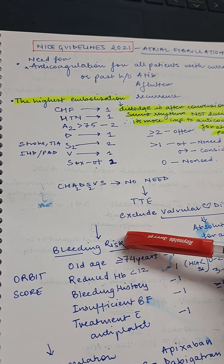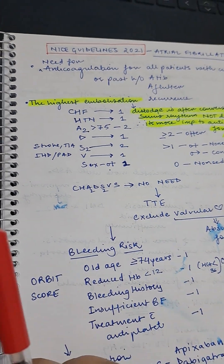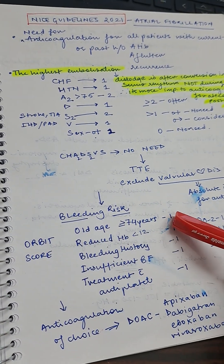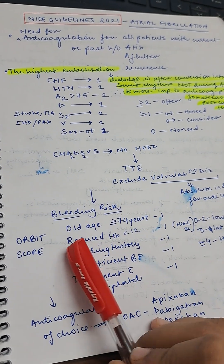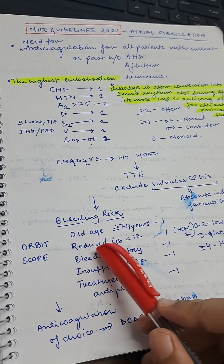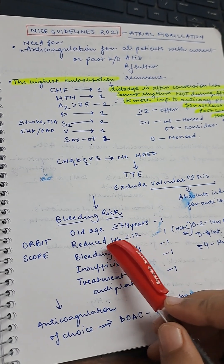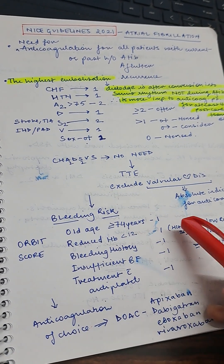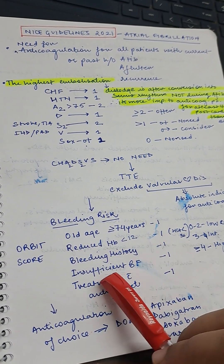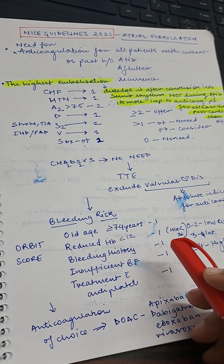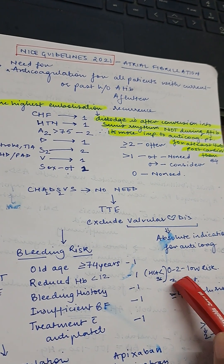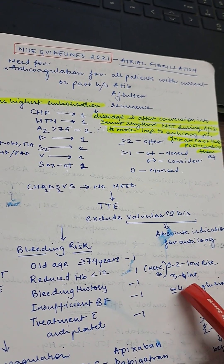After the CHA2DS2-VASc score, you assess bleeding risk using the ORBIT score. Each factor scores one point: age 74 or above, anemia (hemoglobin less than 12 or hematocrit less than 36), bleeding history, insufficient renal function, or current antiplatelet treatment. A score of zero to two is low risk, three is intermediate, and four or more is high risk.